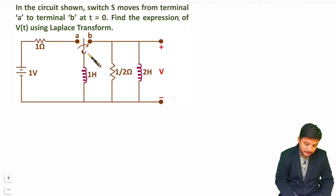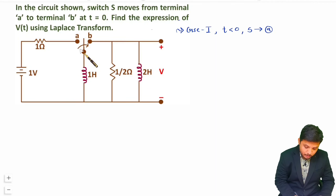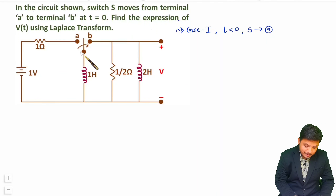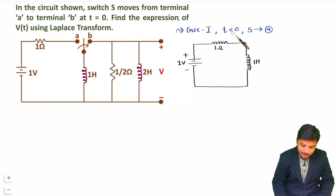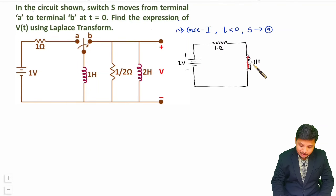Initially, this switch is at location A. In case 1, when this switch is at location A, this circuit is disconnected and only the battery is connected with the resistance and then with the inductor. So we have a 1V source connected with a 1 ohm resistance and a 1 Henry inductor. When t is less than 0, as the switch is connected at location A for a long period, this inductor will get short-circuited.